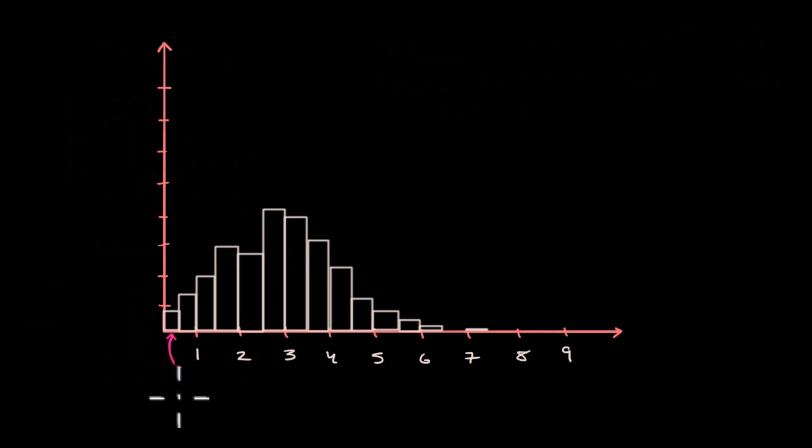And I'm now assuming in a world where we have more than sixteen data points. Maybe we have sixteen million data points. This would be percentages on the left-hand side. But maybe that isn't good enough for you. Maybe you want to get even more granular.